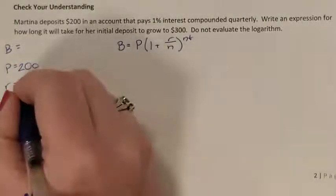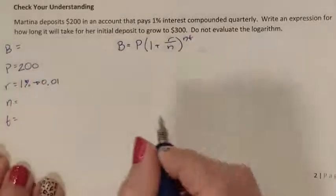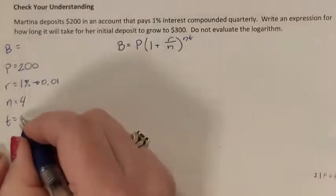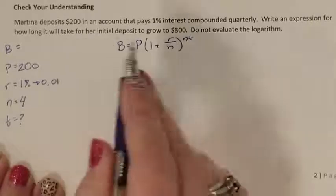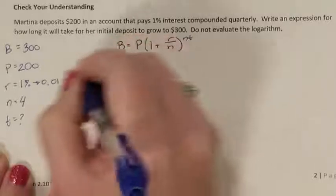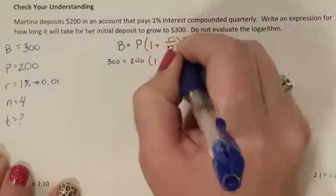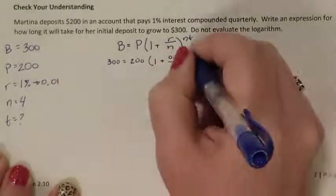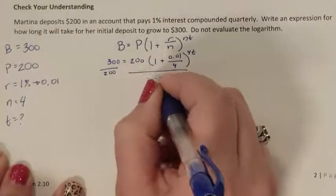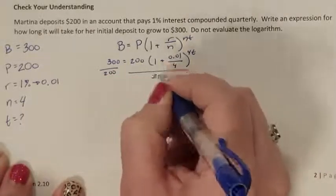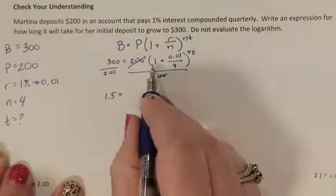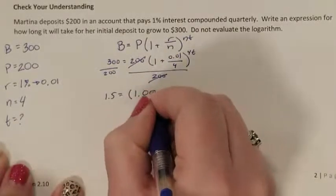The rate is 1%, so R is 0.01. Quarterly means it happens four times in a year. We don't know T — we want how long for the initial deposit to grow to $300. So I have 300 equaling 200 times (1 plus the rate divided by N) all to the Nt power. I need the 200 to go away, so divide both sides by 200. 300 divided by 200 is 1.5. My parenthesis simplifies to 1.0025, raised to the exponent.